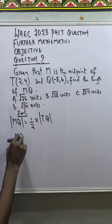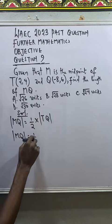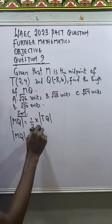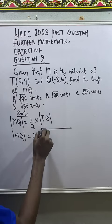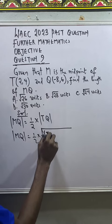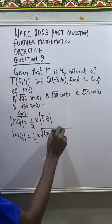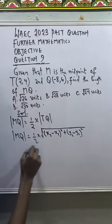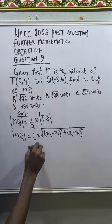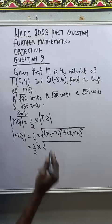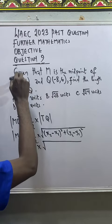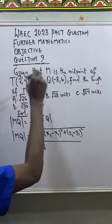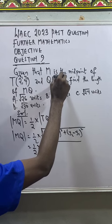So I will have MQ to be equal to 1 over 2 times square root of - what is the distance formula? That is (x2 minus x1) squared plus (y2 minus y1) squared. So this will be 1 over 2 times square root of x2 minus x1. You can take this as x1, y1, x2, y2.